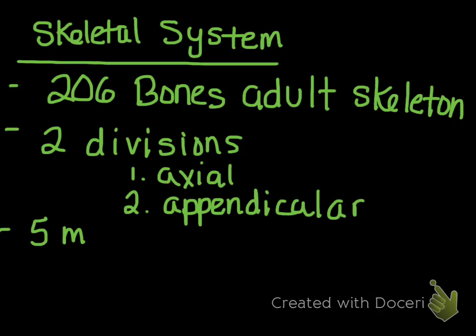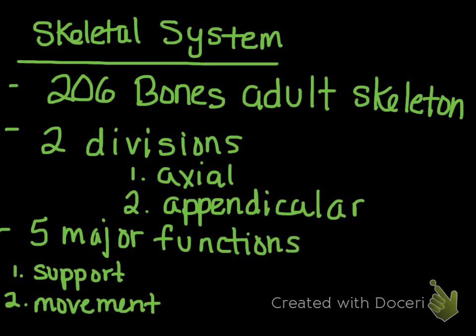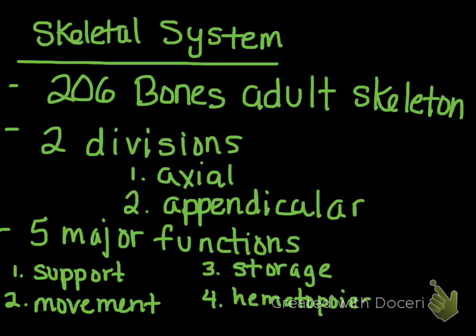There are five major functions of the skeletal system. First, support and movement — bones provide a frame for the body and attachment points for muscles. Third is storage — bones are a reservoir for minerals like calcium, and fat is also stored in bones. Fourth, immature red blood cells are stored in bones, where hematopoiesis — blood cell formation — takes place, producing red blood cells, all varieties of white blood cells, and platelets. Fifth, protection — bones protect our underlying organs.